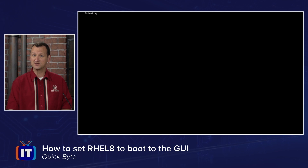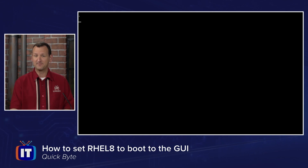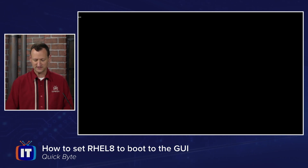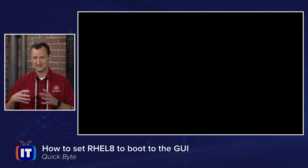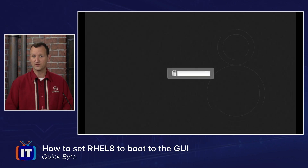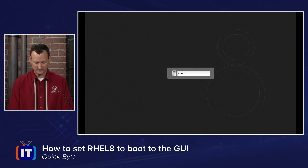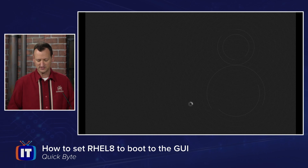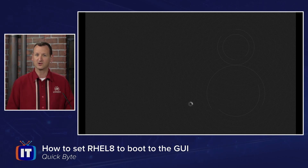If you have LUKS encryption on, you'll have to punch in that password and then afterwards you'll be able to see the full window manager load the GNOME environment or whichever window environment you've set as your default. I'm just going to clear past that and then as soon as it gets by there, we'll move into our graphical user interface.